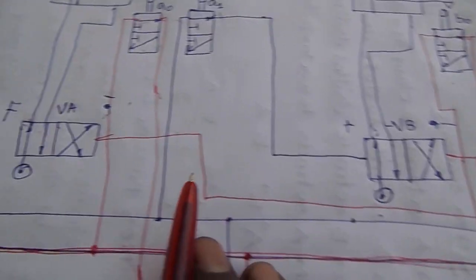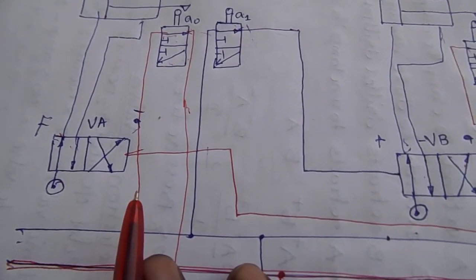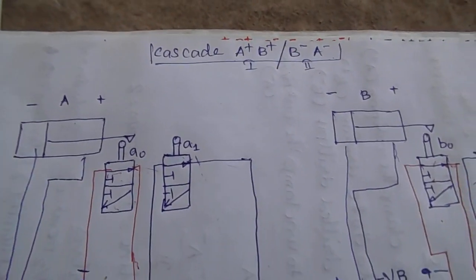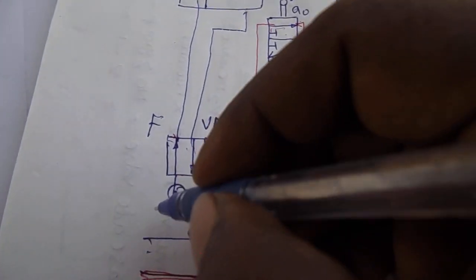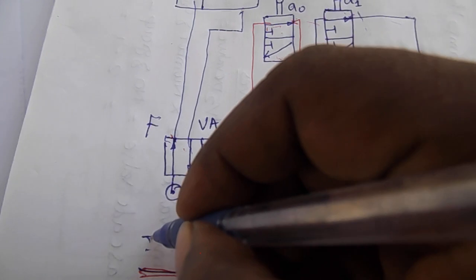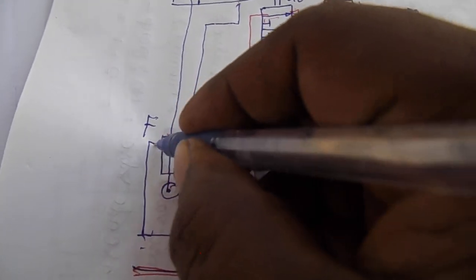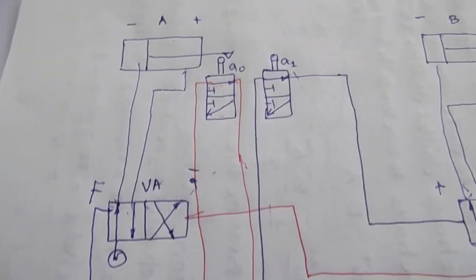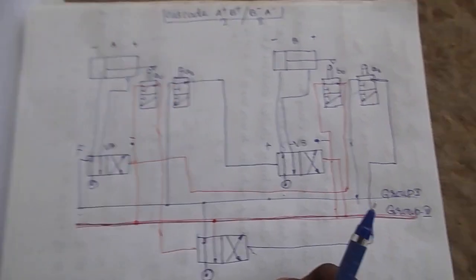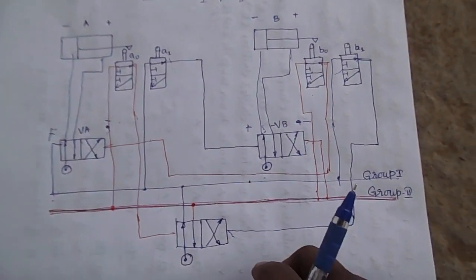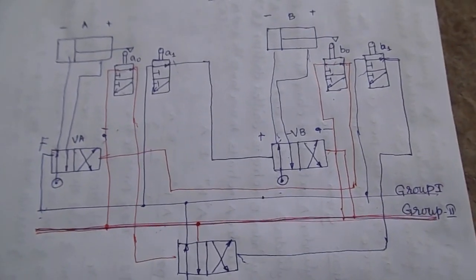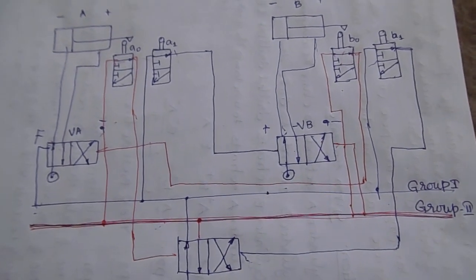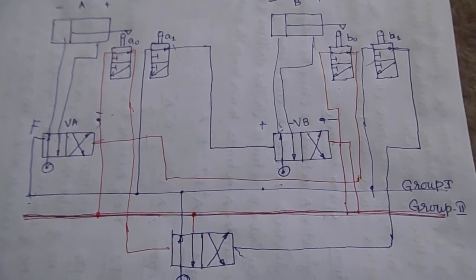Now we will take the pressure line and put it in. We will take the pressure line a few more times. Group change is not enough, so we will take pressure. Then we will take the pressure line. We will take this circuit a few more points. Thank you.